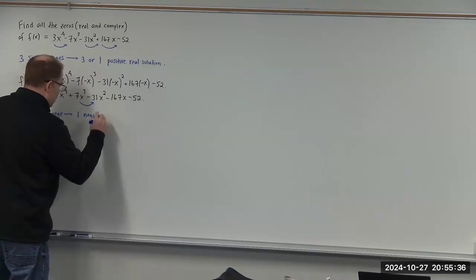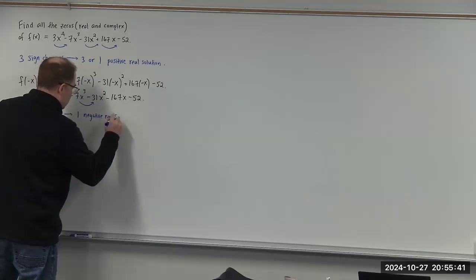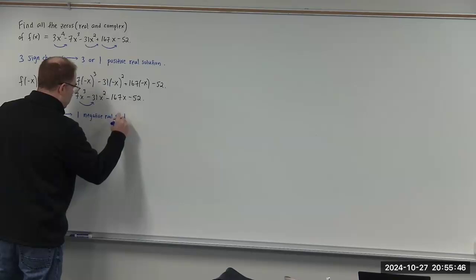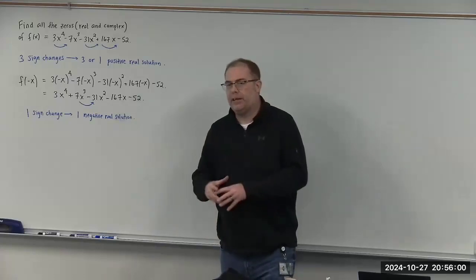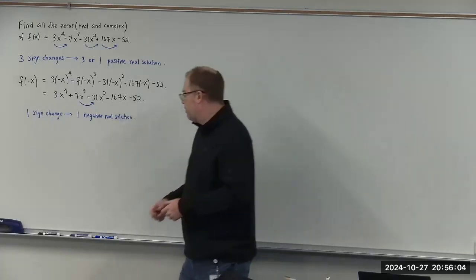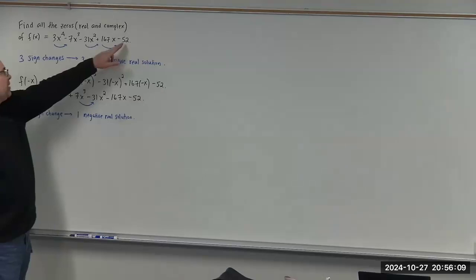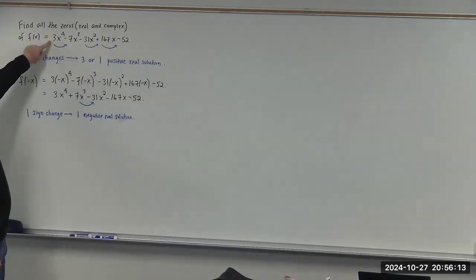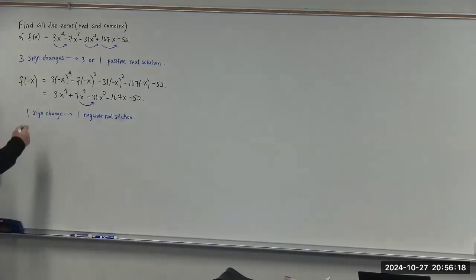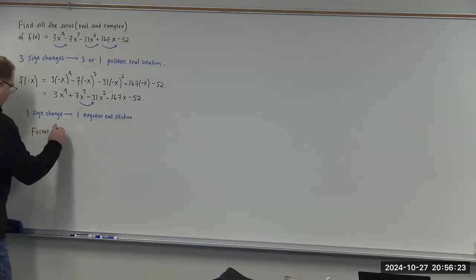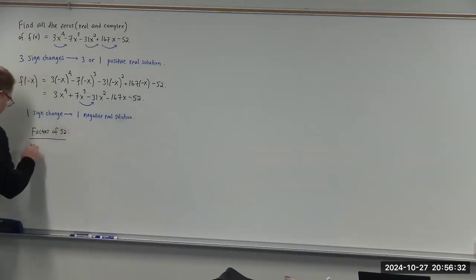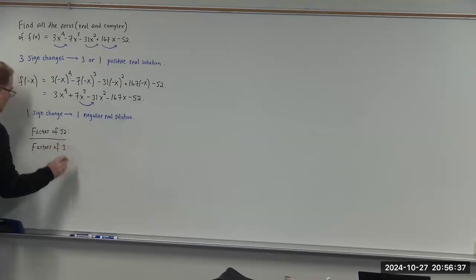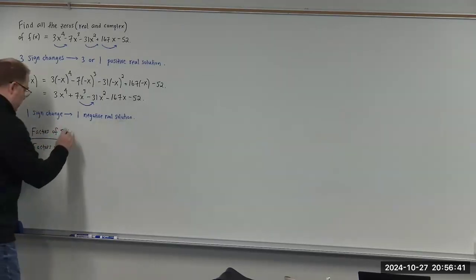In order to start our search for the roots, let's create a list of possible rational zeros. To do that, we take the factors of the constant term divided by all the possible factors of the leading coefficient, including positive and negative values.